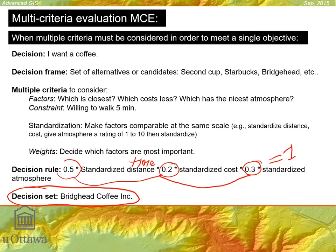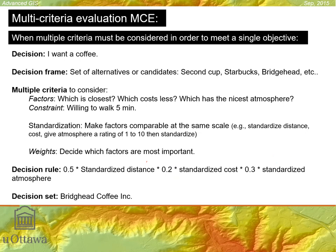In this case it comes out to be Bridgehead Coffee. That's quite a formal way of thinking about things — you don't do that consciously. You think, I want a coffee, here's Second Cup, it's a little closer, Starbucks a little further, but I really like Starbucks. And then you make some decision. But you're really using multi-criteria evaluation — it's something you do all the time, just in an informal way.